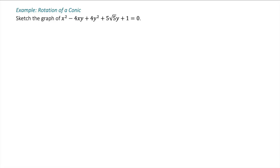Sketch the graph of x squared minus 4xy plus 4y squared plus 5 root 5 y plus 1 equals 0. This is a standard equation for a conic. The xy term tells me that this is a rotated conic, so I'm going to convert this to a new coordinate system where I don't have the xy term, so I'll be able to graph it.